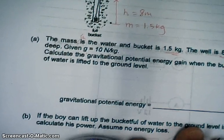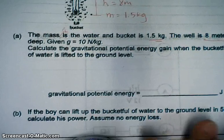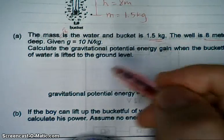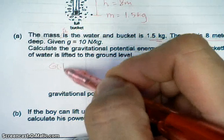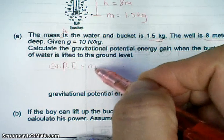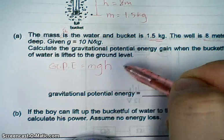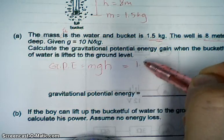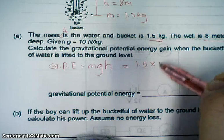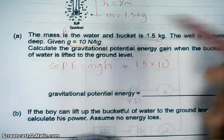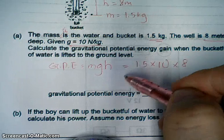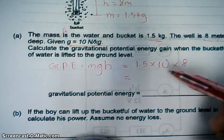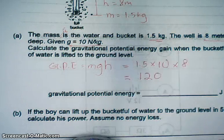So now let's work at the gain in GPE, gravitational potential energy. GPE equal to mgh. Equal to 1.5 times 10, given to you here g, and multiply by 8. Which is equal to 120 joules.